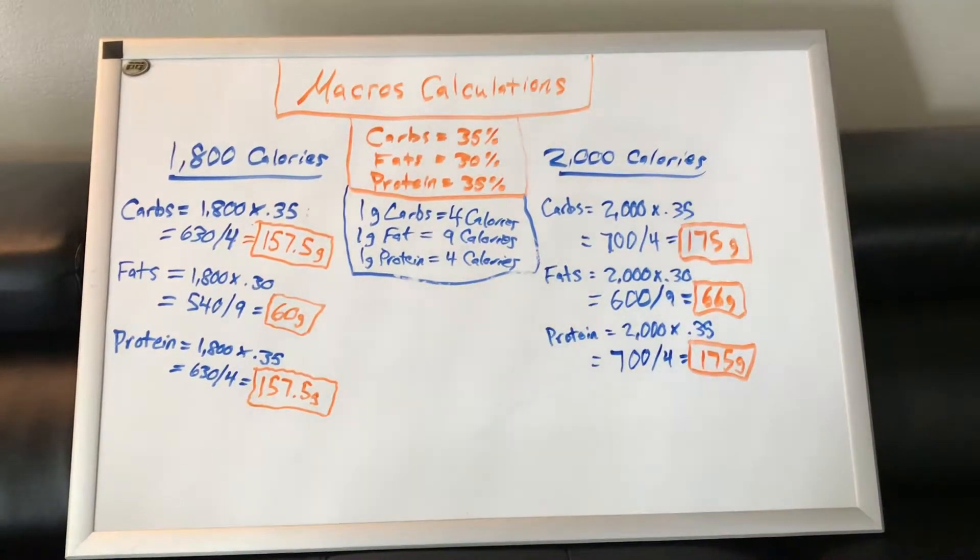With protein, you usually want to get 0.825 grams per pound. I would recommend minimum get that. And then if you're training hard every single day, you can do a gram per pound. I try to get usually one gram of protein per pound every single day, but your protein intake is very important to hit every day.